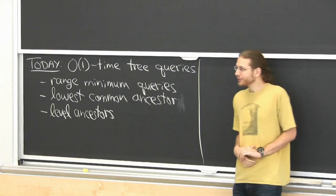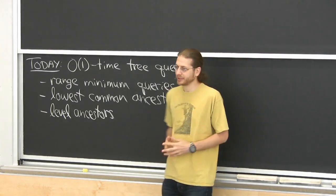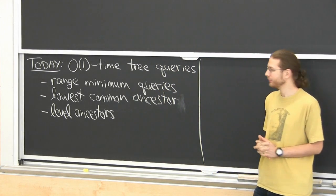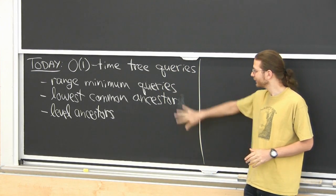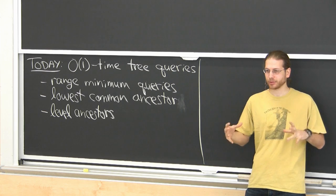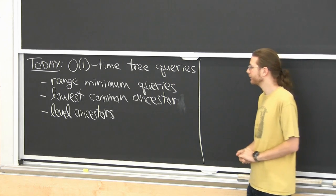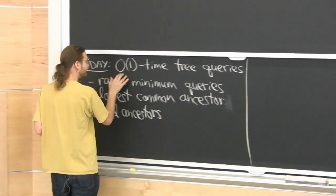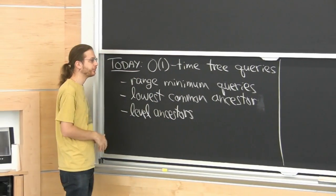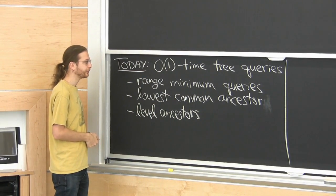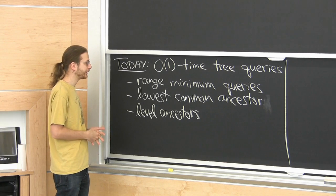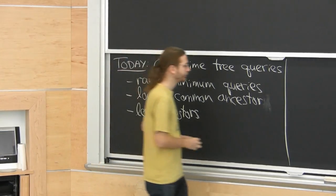Today we're going to look at some different data structures for static trees. In the second two problems, we have a static tree we want to preprocess to answer lots of queries. All the queries we're going to support today we'll do in constant time per operation, which is pretty awesome, and linear space. That's our goal. It's going to be hard to achieve, but in the end we will do it for all three of these problems.